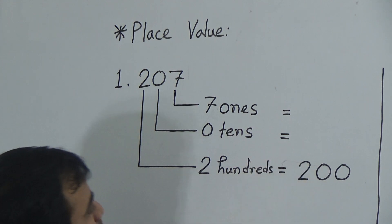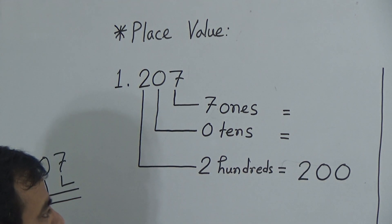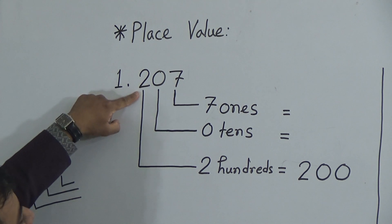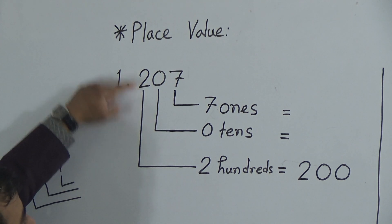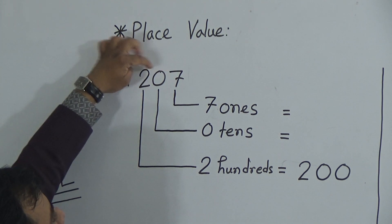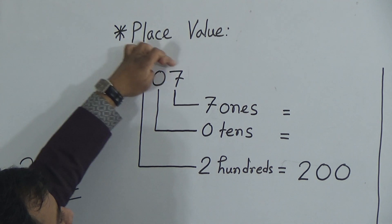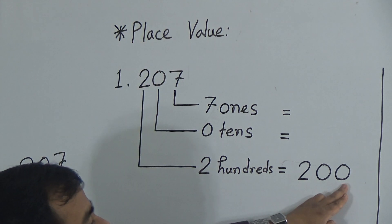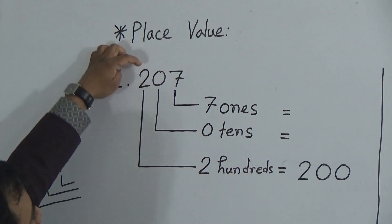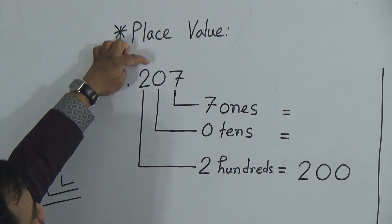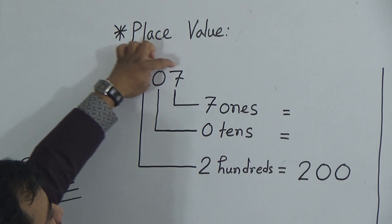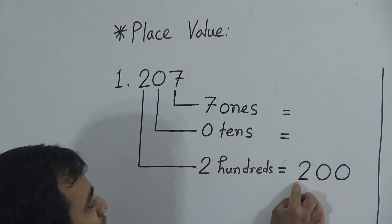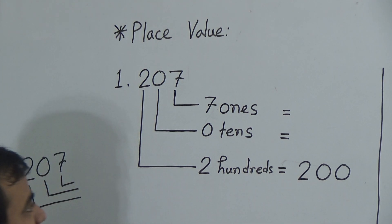We should start from the bottom. After 2, how many digits are there? There are 2 digits after 2, so we will give 2 zeros after 2 to make 200. I repeat: after 2 we have 2 digits, so we write 2 zeros after 2 to make 200.